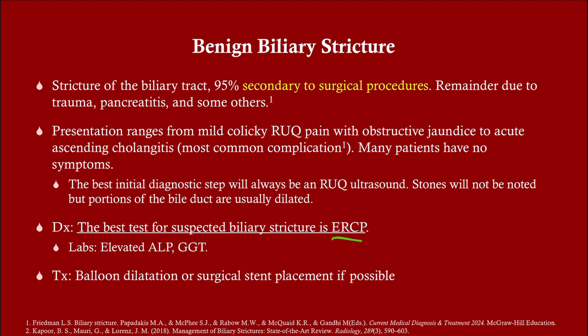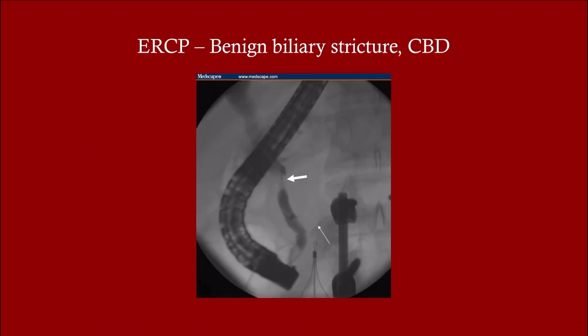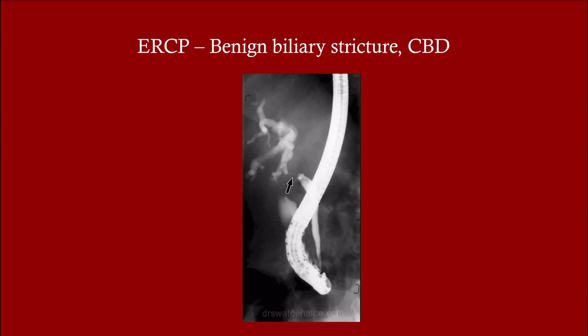The labs will show an obstructive picture — ALP and GGT as opposed to the transaminases. The treatment for strictures is dilation or stent placement, especially if they've had repeated episodes. Here you can see the stricture very clearly, and consequently you see dilation of the proximal duct.